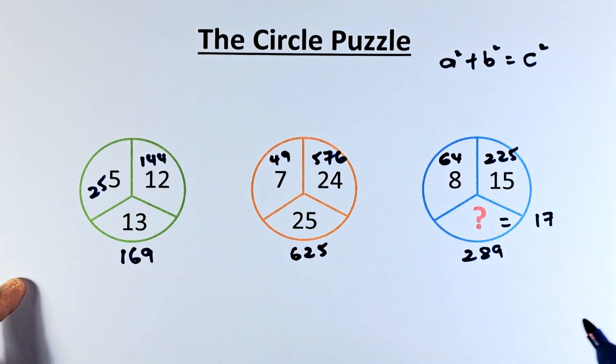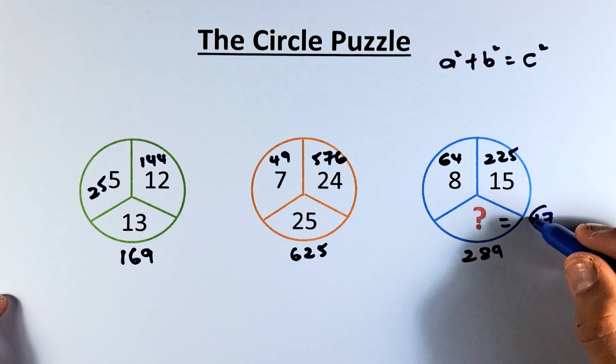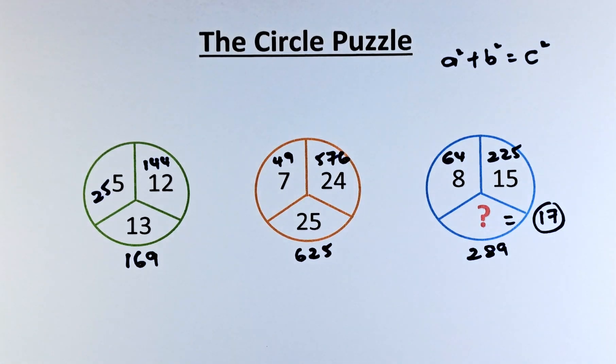Because 8² + 15² = 17², which is 289. I believe most of you got it right, because you guys are geniuses. I'll see you in the next one. Cheers, everyone. Have a good day.